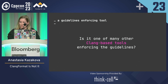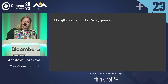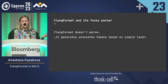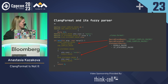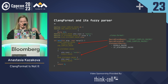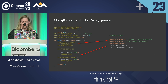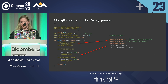But is it really a Clang-based tool? It's called ClangFormat, but the interesting thing is that it has a fuzzy parser — it doesn't actually parse the way Clang parses. It just generates annotated tokens based on a simple lexer. So no proper AST, no handling of includes. If you have to deal with macros in ClangFormat, you have to do magic. If you have a macro which starts or ends a block, to indent properly you have to use parameters called macro block begin and macro block end to explain that it's actually beginning or ending the block. Or you have to put it into statement macros to explain that it's a full statement which needs a new line.